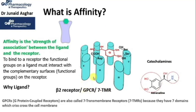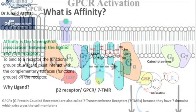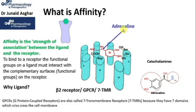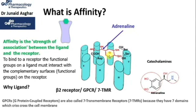Since these receptors, after agonist binding, activate the G-proteins inside the cell, they are called G-protein coupled receptors. Now let's see how some functional groups on adrenaline interact and form bonding with the functional groups on the receptor. Here the red chemical structure is adrenaline. You can see there is a peptide bond formation between the amino group of adrenaline and the carboxylic group of aspartic acid on the third domain of the beta-2 receptor.